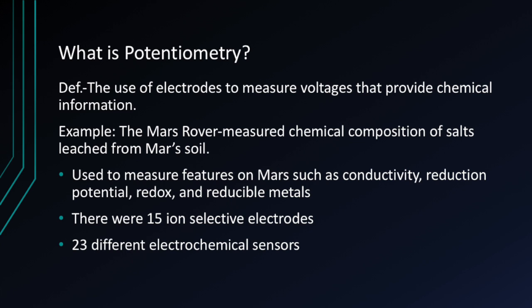An example of this in real life is the Mars rover. It was sent to Mars and there the chemical composition of salts leached from Mars soil were measured. Potentiometry was used to measure features on Mars such as conductivity, reduction potential, redox, and reducible metals. There were 59 selective electrodes and 23 different electrochemical sensors.